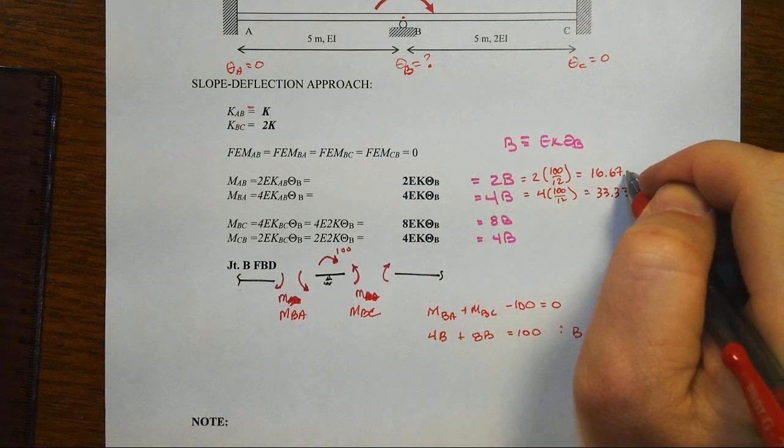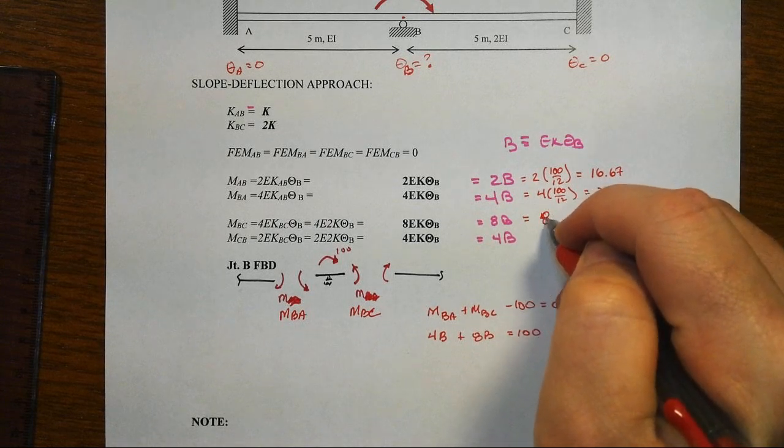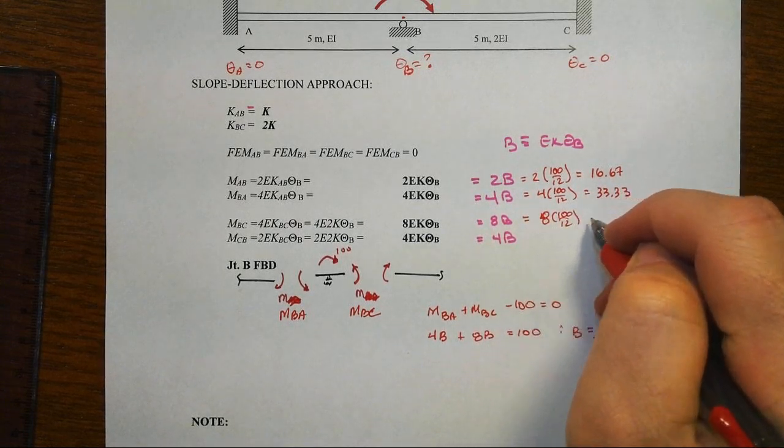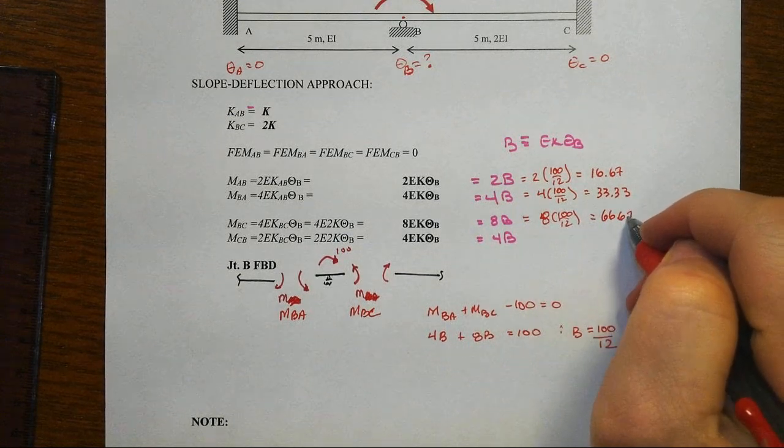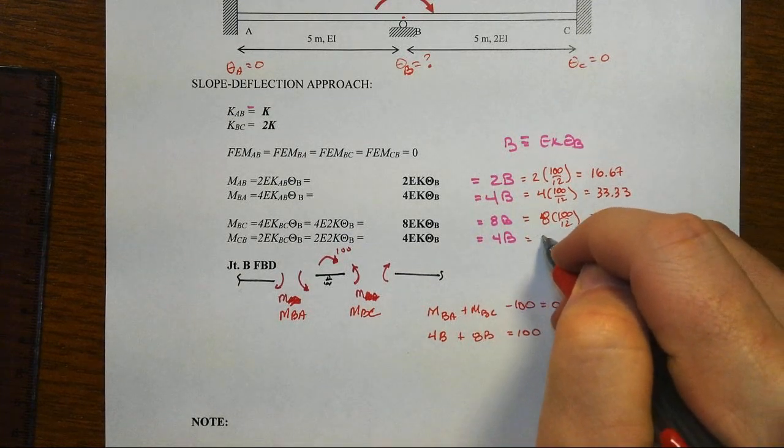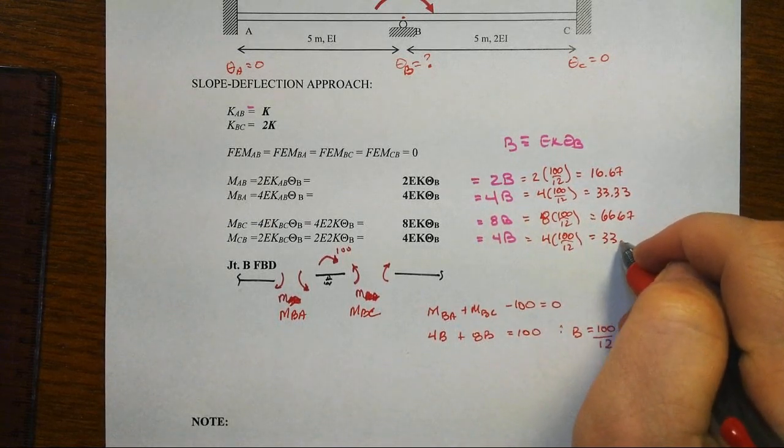And this will be then 8 times 100 over 12, equals then of course 66.67, and then finally 4 times 100 over 12, we're back to 33.33.